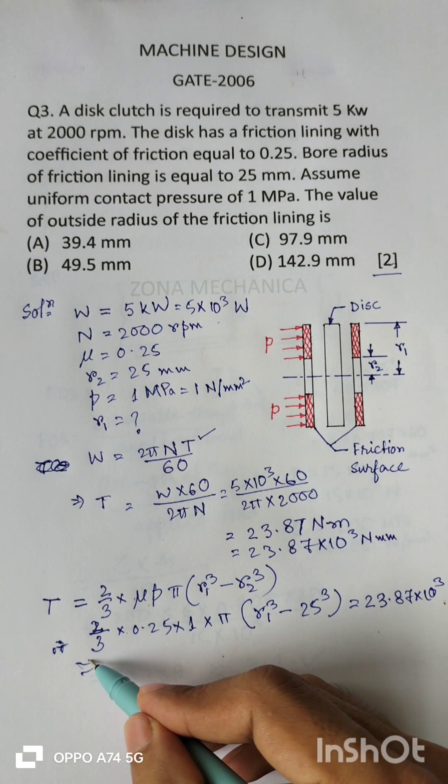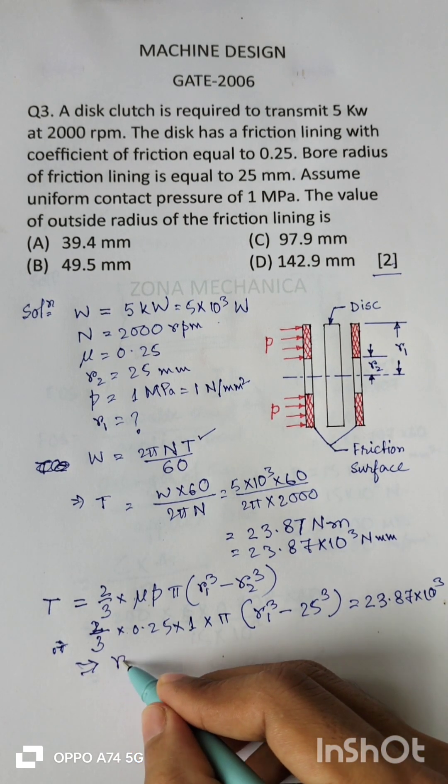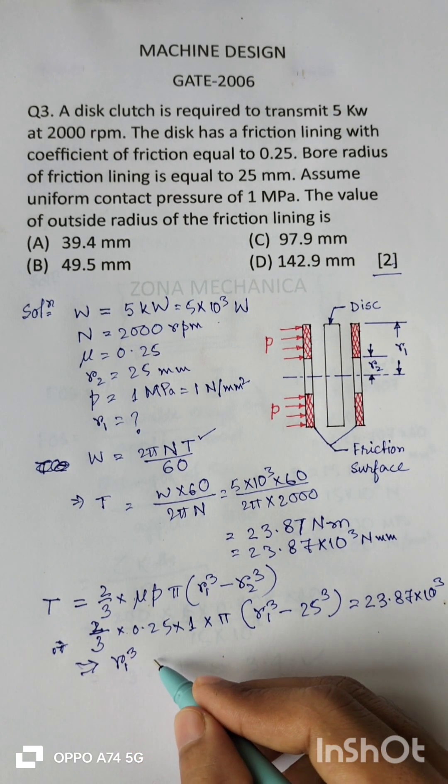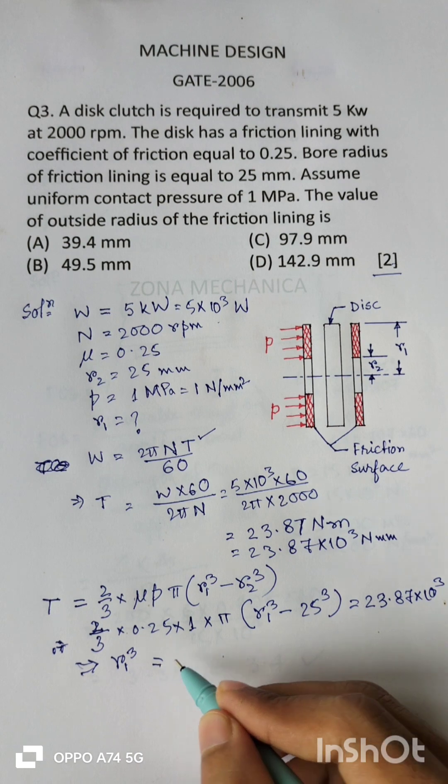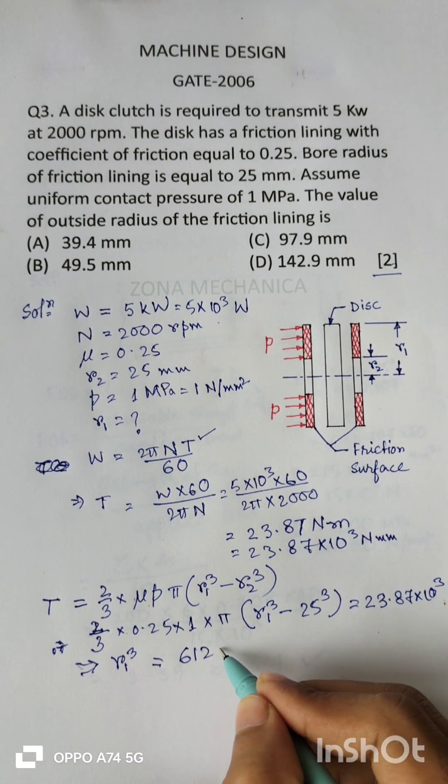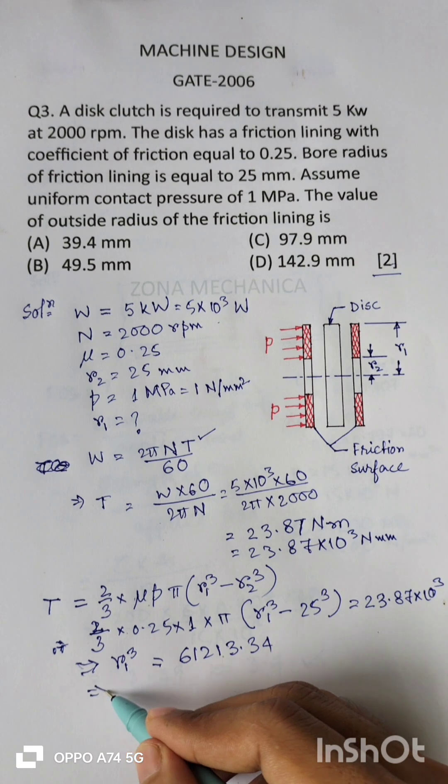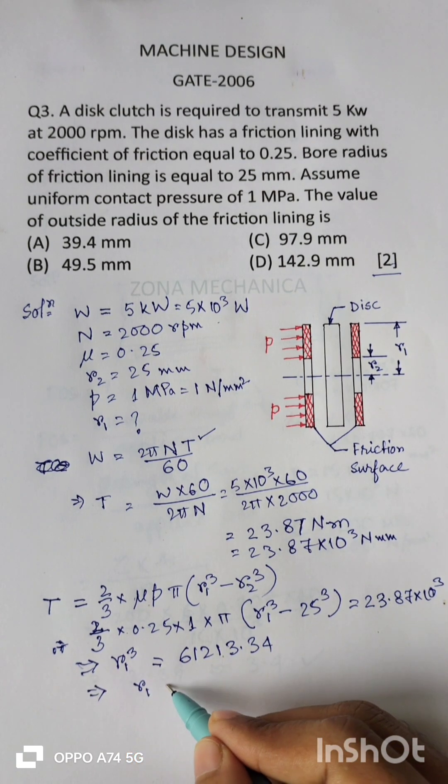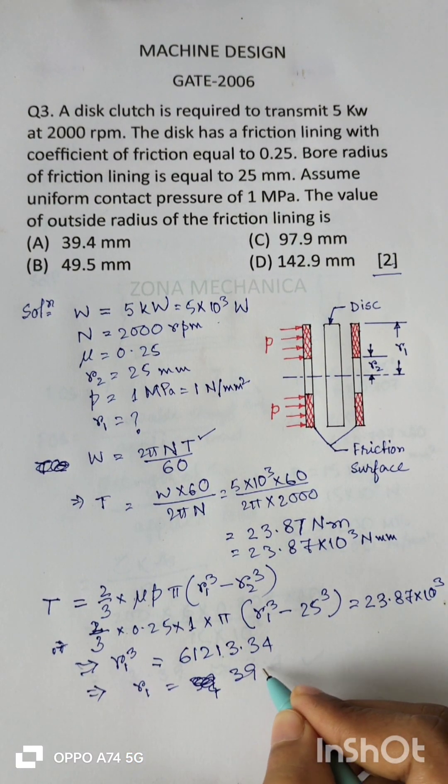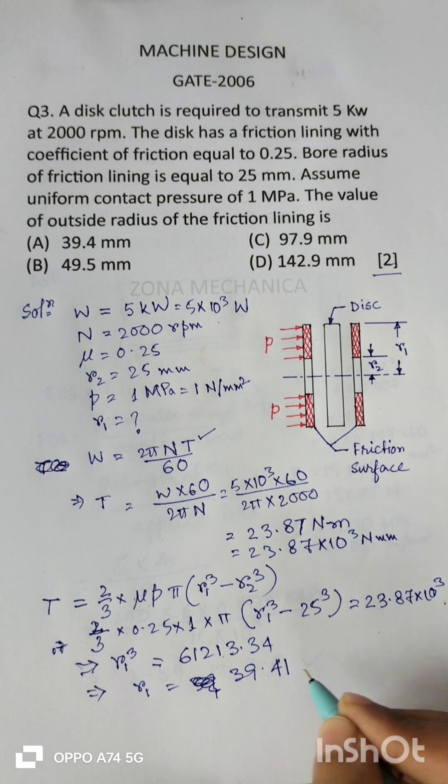So which implies R1 cube is equal to 61213.34, so which implies R1 is equal to 39.41 mm.